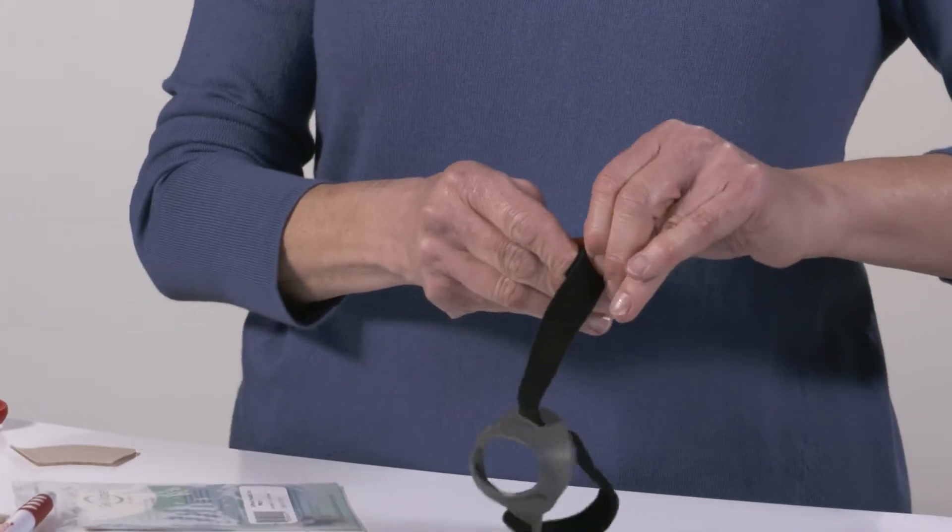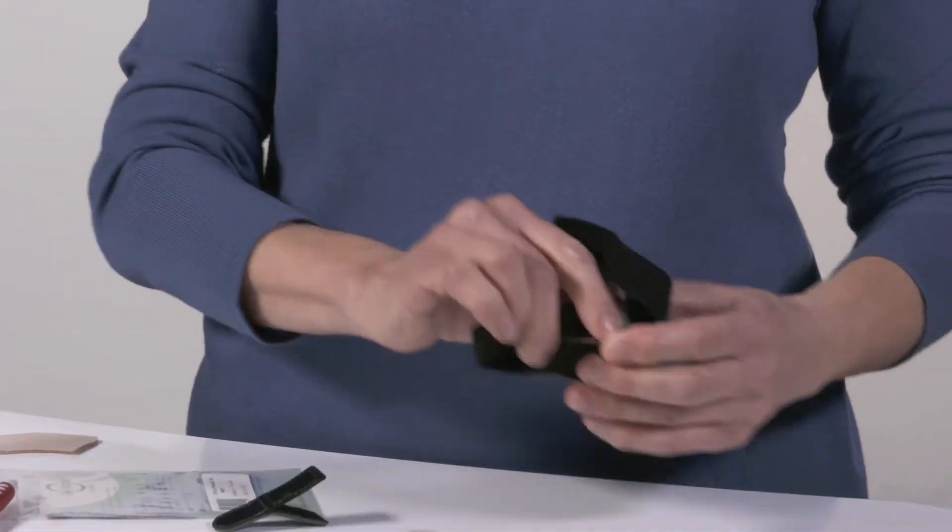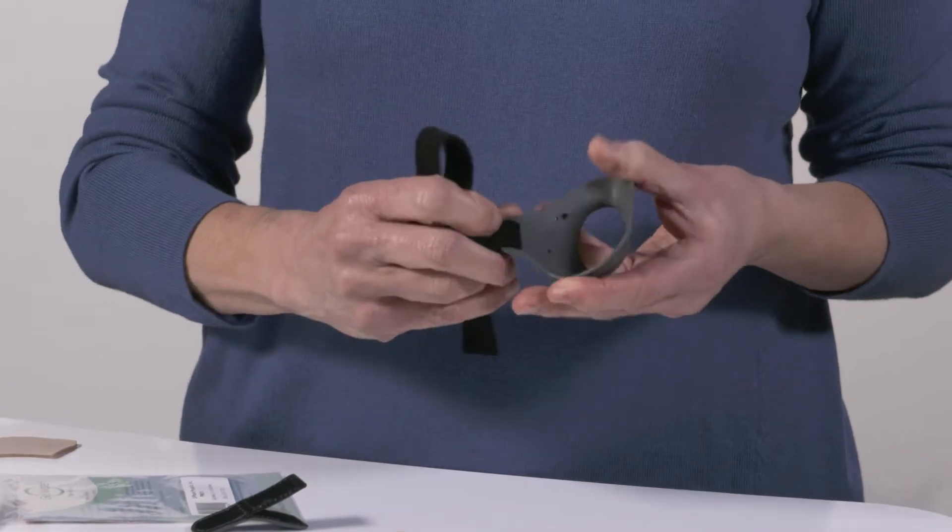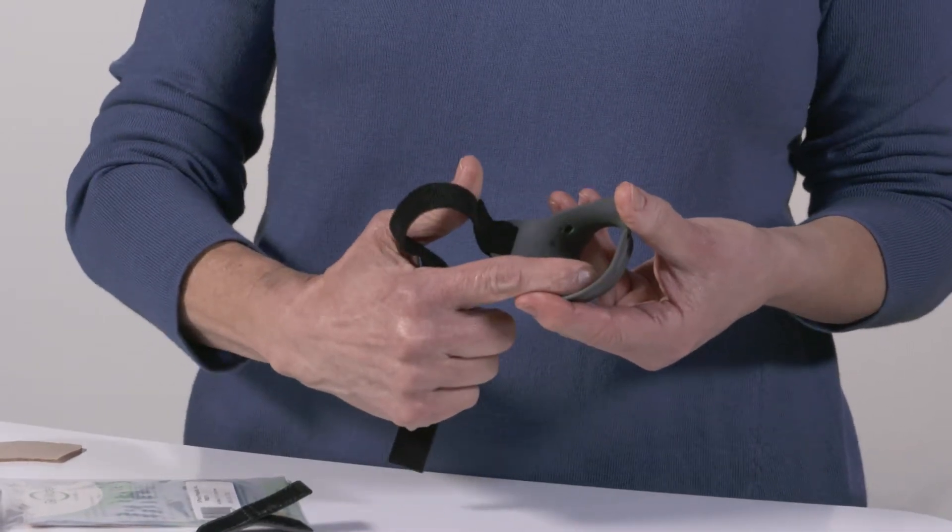Remove the strap by first opening the tab and pulling the strap off, and pull it out of the brace so the area where you're going to put the pad is open.